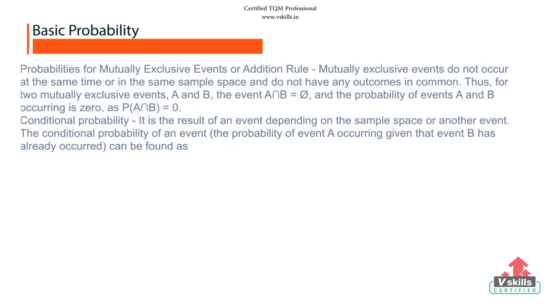Probability for mutually exclusive events or addition rule: mutually exclusive events do not occur at the same time or in the same sample space and do not have any outcomes in common. Thus, for two mutually exclusive events A and B, the event A intersection B equals null and the probability of events A and B occurring is 0, as P A intersection B equals 0. Conditional probability is the result of an event depending on the sample space or another event.